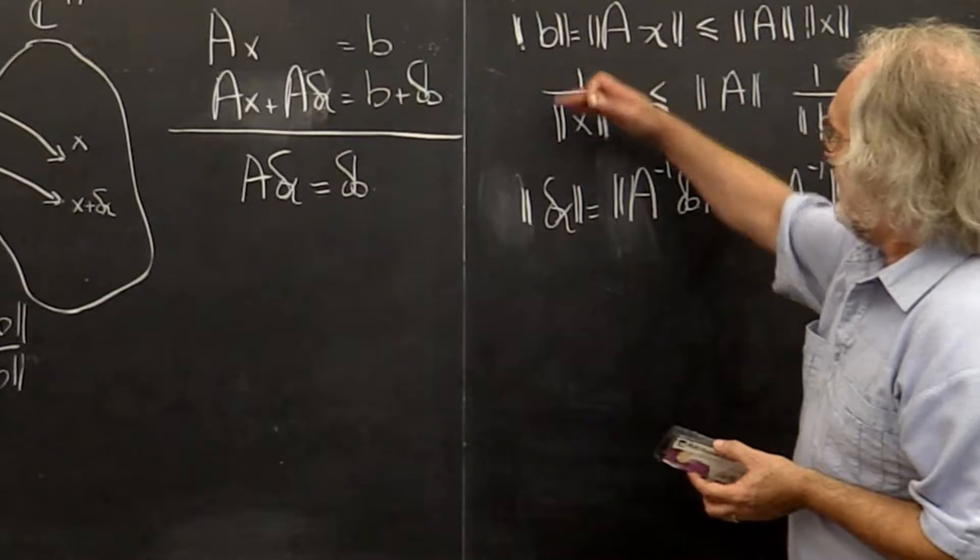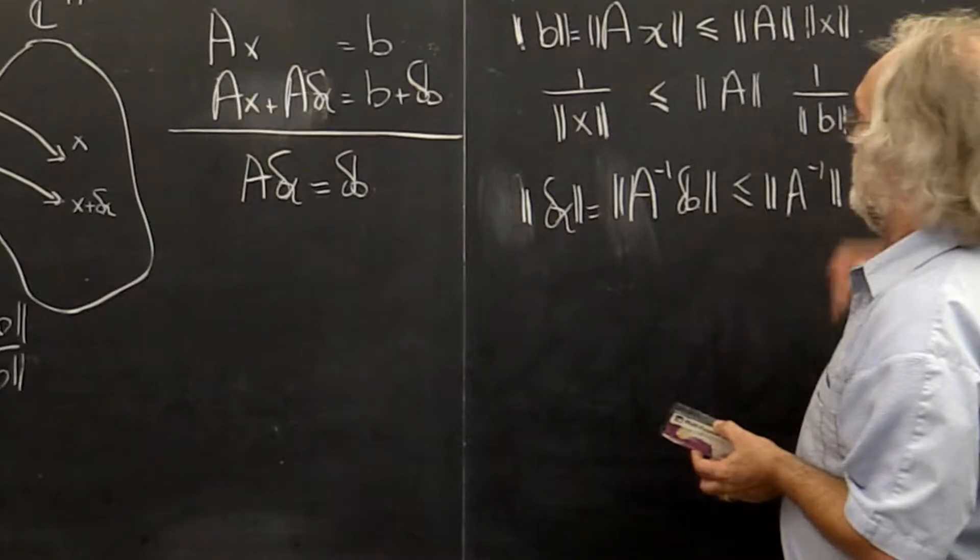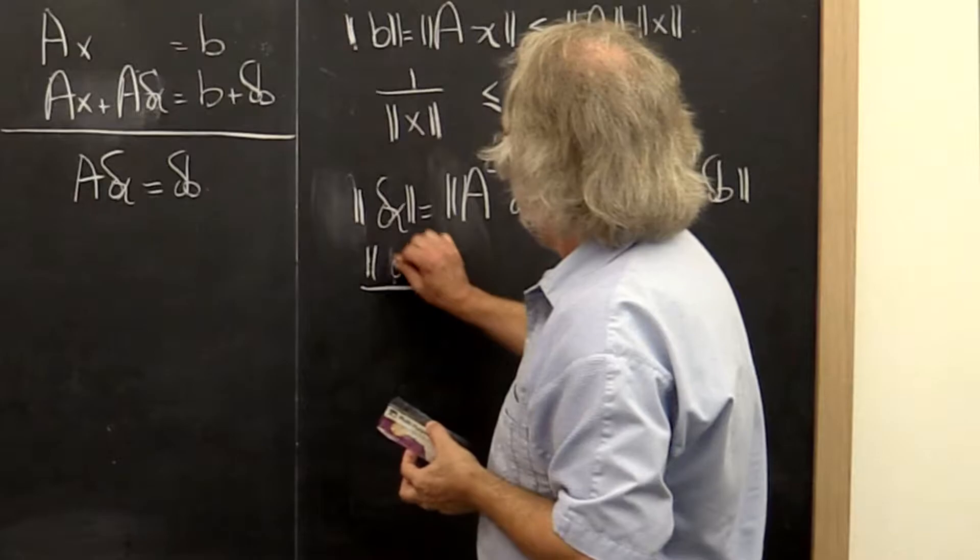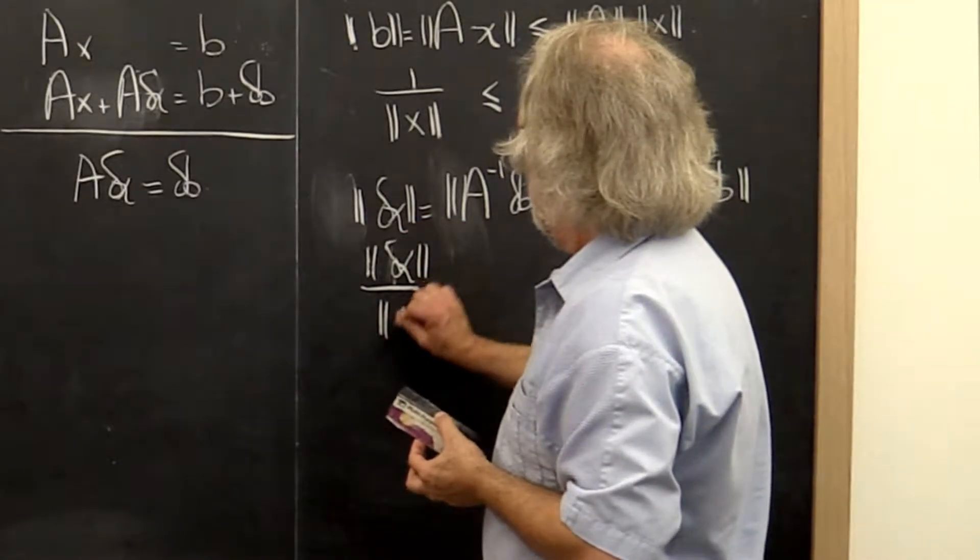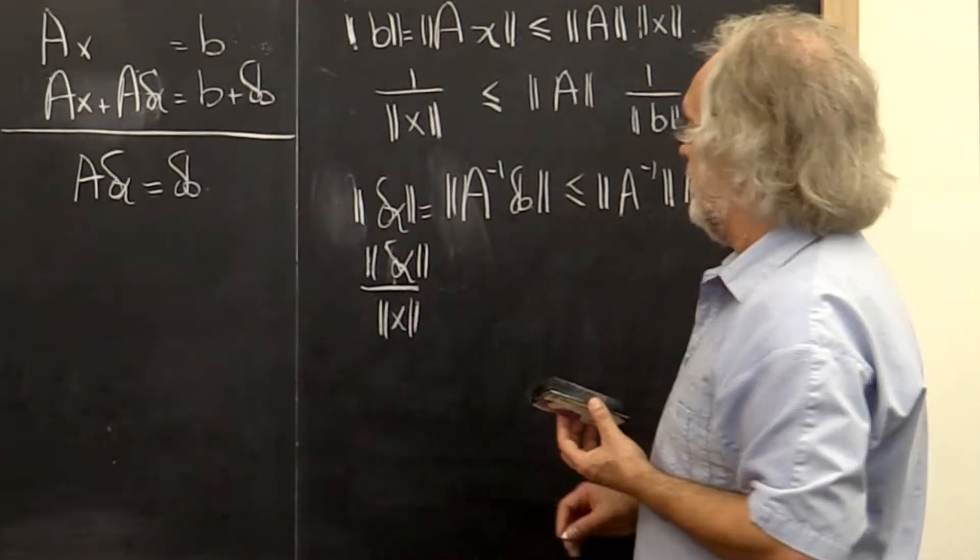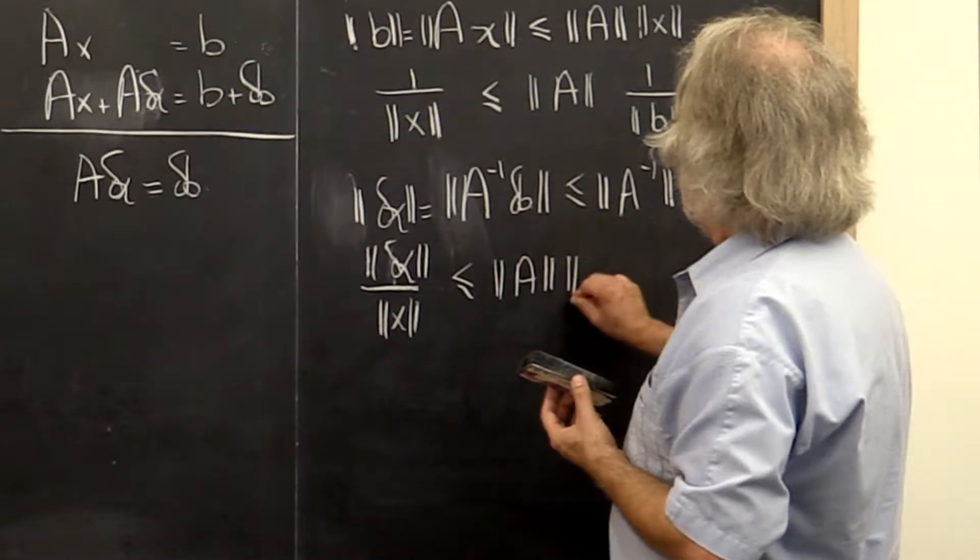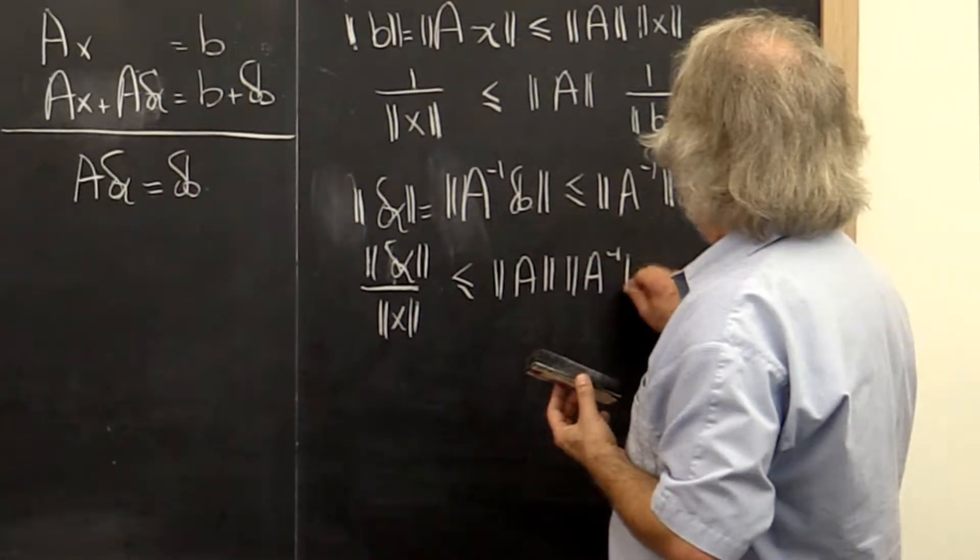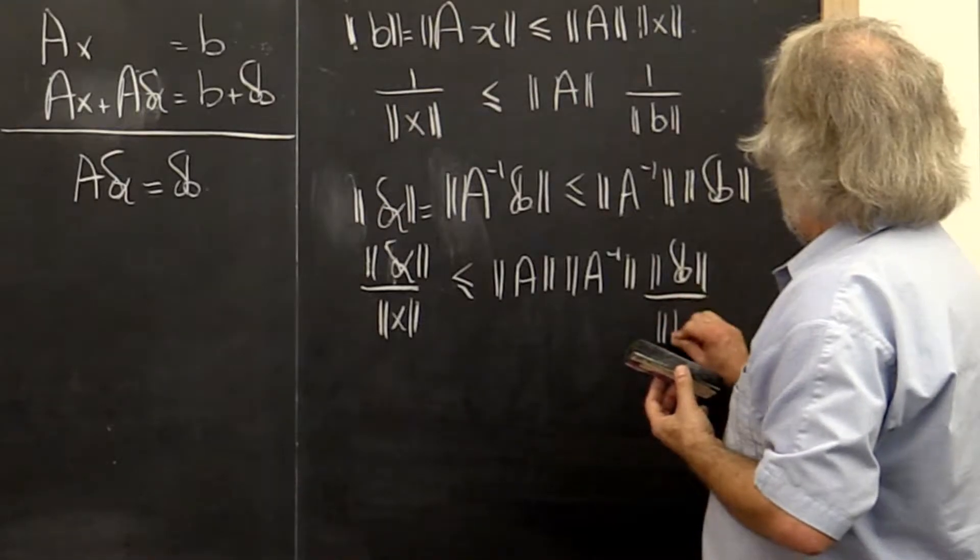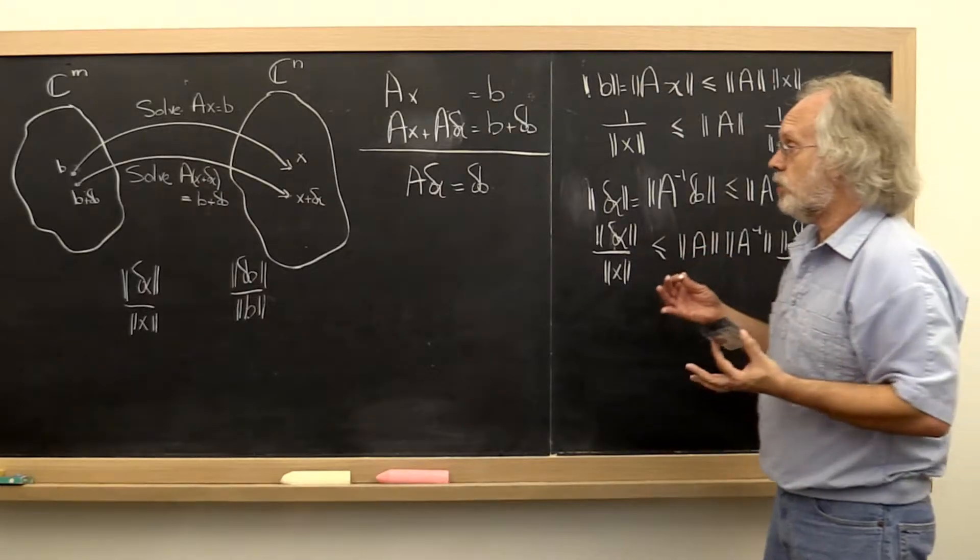Now multiply these inequalities together. We get the norm of delta x over the norm of x—the relative error in x—is bounded by the norm of A times the norm of A inverse times the norm of delta B over the norm of B. So we now have answered our question.